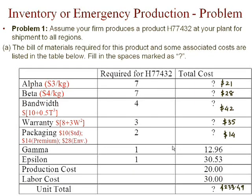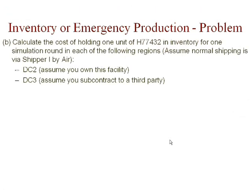Once we have figured out the total cost for this product, let's move forward with an understanding of inventory cost and emergency production cost. We'll look at some of these trade-offs using this product. Calculate the cost of holding one unit of this product in inventory for one simulation round in each of the following regions, assuming normal shipment using shipper I by air. For DC2, we assume we own our own facility. For DC3, we assume we are subcontracting the DC from a third party.